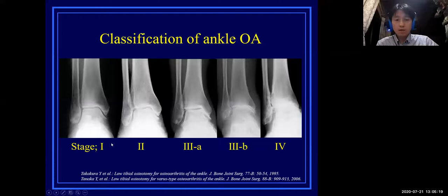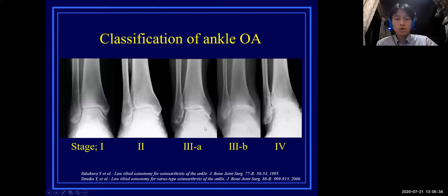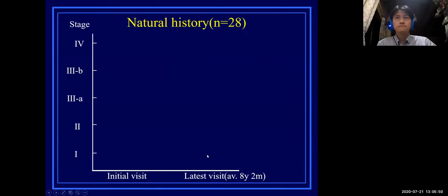Classification of ankle OA is shown in this slide. Stage 1 is a slightly sclerotic change with no evidence of joint narrowing. Stage 2 is narrowing of the joint space. Stage 3A is partial disappearance of the joint space, remaining at the medial malleolar joint. Stage 3B advances to the distal tibiotalar joint. Stage 4 is complete disappearance of the joint space.